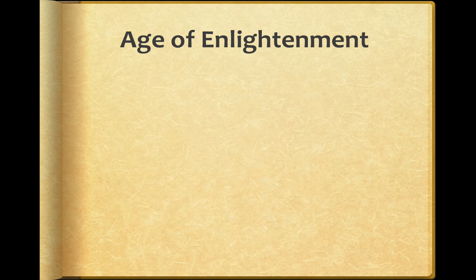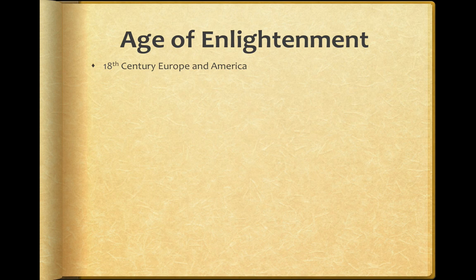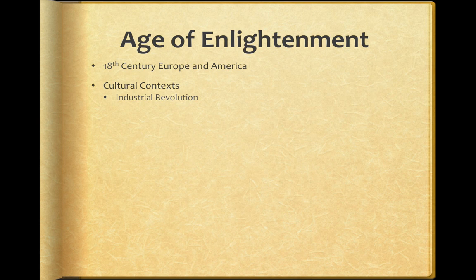The next major cultural and political movement is the Age of Enlightenment, which holds onto a handful of neoclassical ideas but brings many new and different things on board. It takes place primarily during 18th century Europe and also in America — we're talking about the 1700s. The major cultural contexts include the continuing forward movement of the Industrial Revolution: science, technology, manufacturing, and industry are growing. More and more things are being made that more and more people can own, creating a democratization of consumer goods.